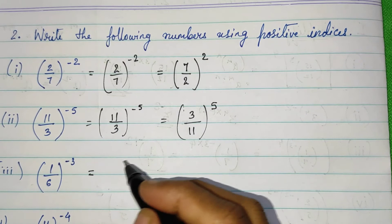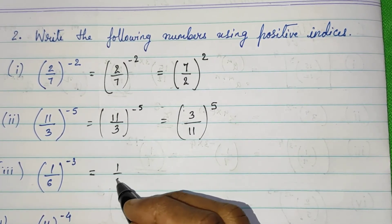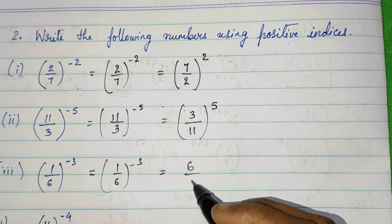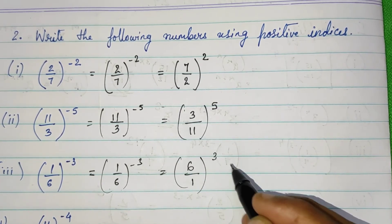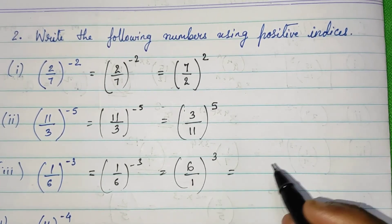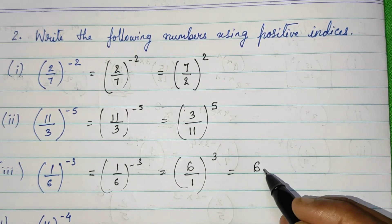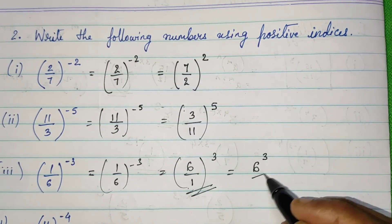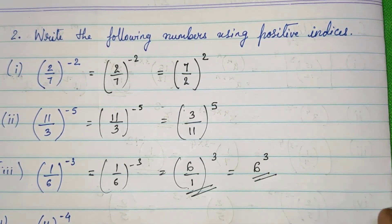Further, 1 upon 6 the whole raised to minus 3. So 6 upon 1 raised to 3. Now see, 6 upon 1 is equal to 6. Every number has upon 1, so 6 raised to 3. Both are answers. Any one you can write.